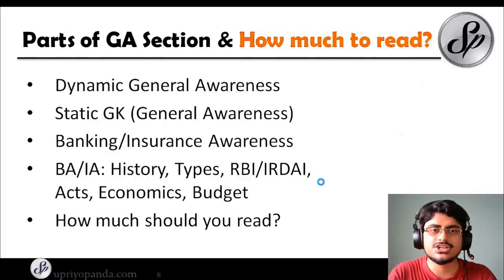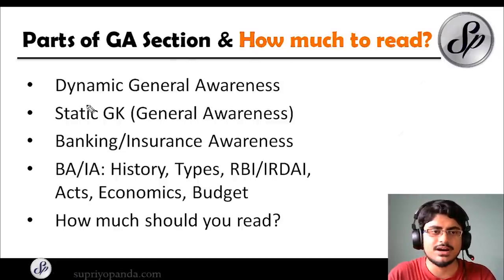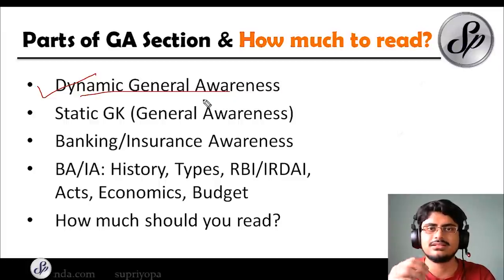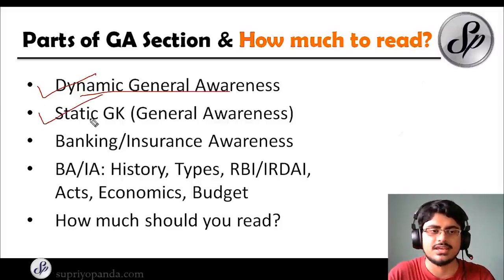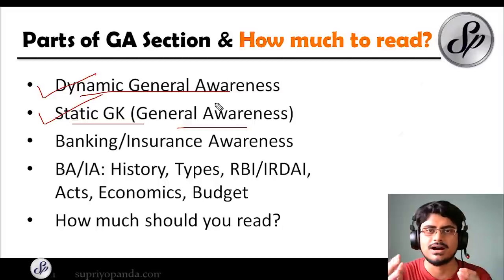Now let's move to the parts of the GA section and how much you should be reading. There are three main parts of General Awareness. The first is Dynamic General Awareness — the normal current affairs, what we read day to day, different events happening that keep changing. Then you have Static GK, which does not change — things like names of dams, Tiger Reserves, National Parks, etc.